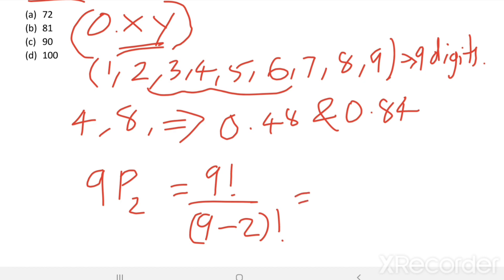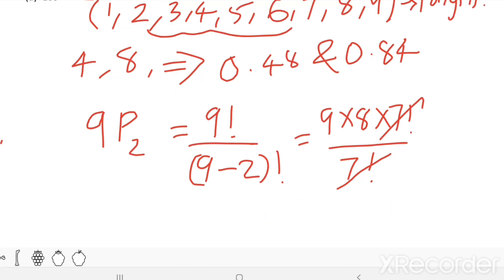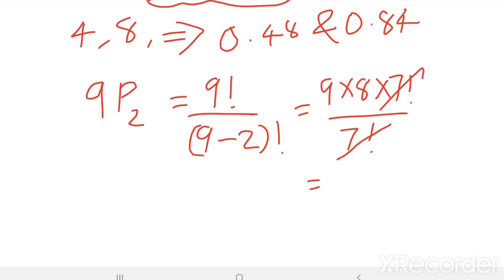9 factorial equals 9 times 8 times 7 factorial, divided by 7 factorial. The 7 factorials cancel, so 9 times 8 equals 72.